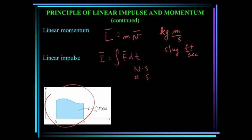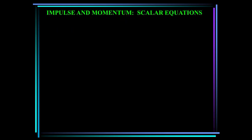If you have a graph like this one, you can get the impulse just by calculating the area under the curve. Impulse is the integral of F dt. If F is constant, we can say that the impulse is F times t2 minus t1. And I'll put F sub c to let you know that's constant.